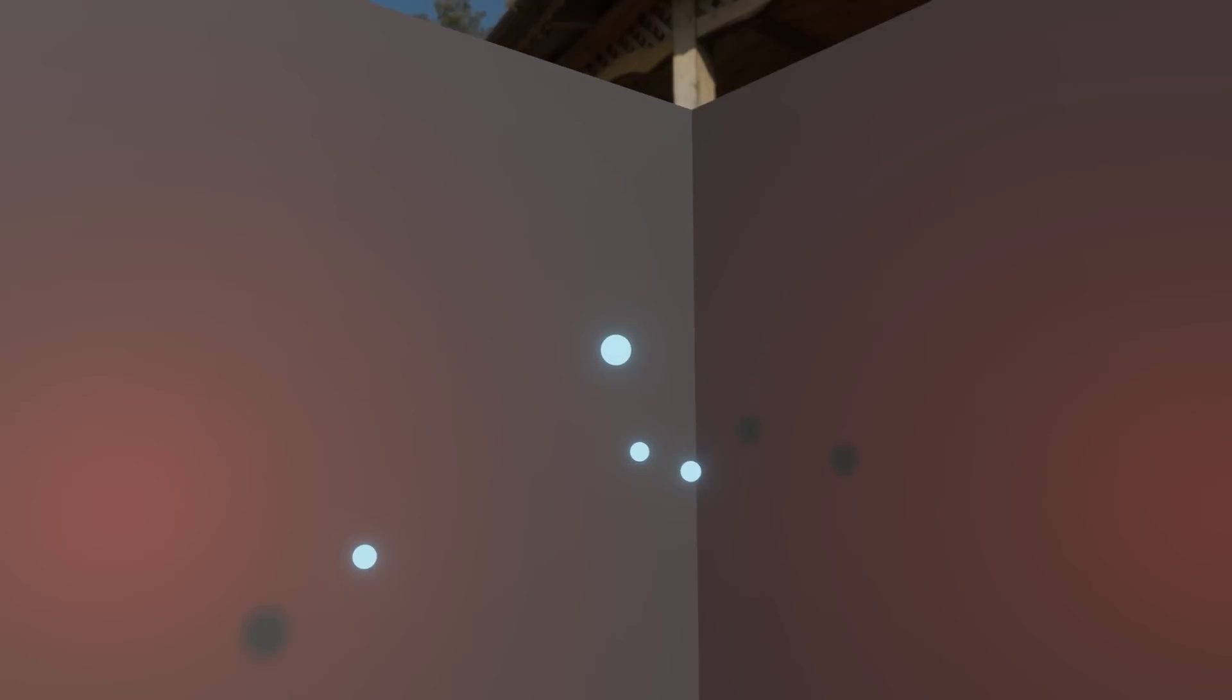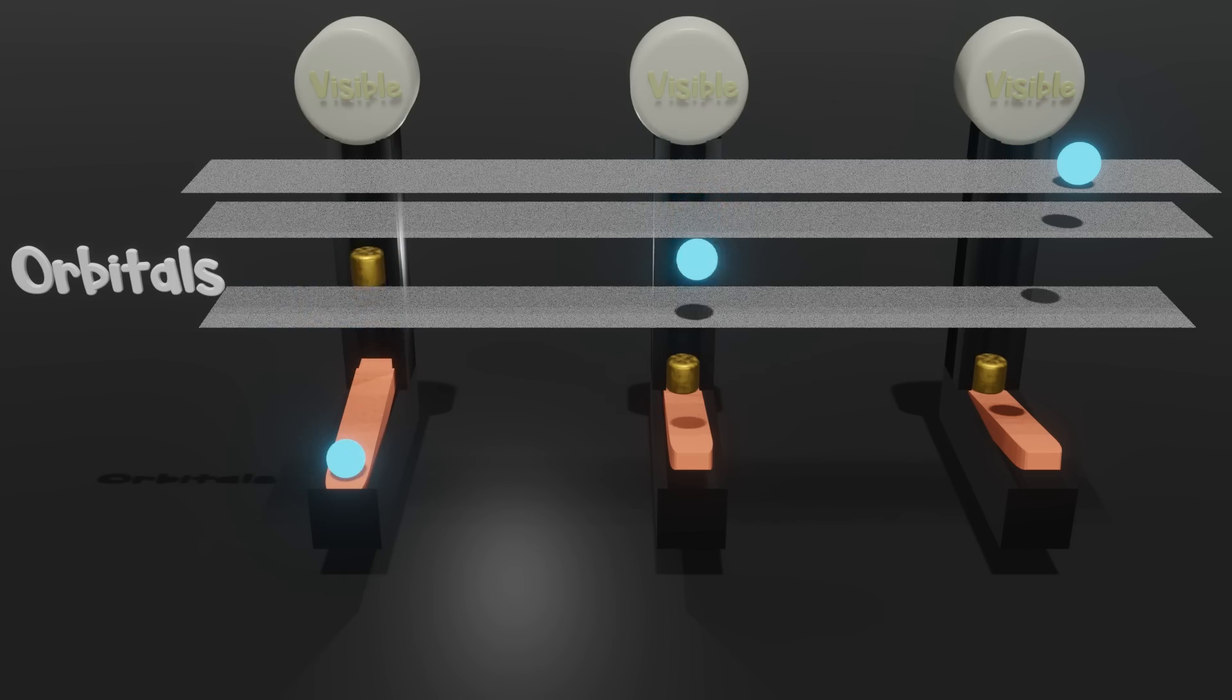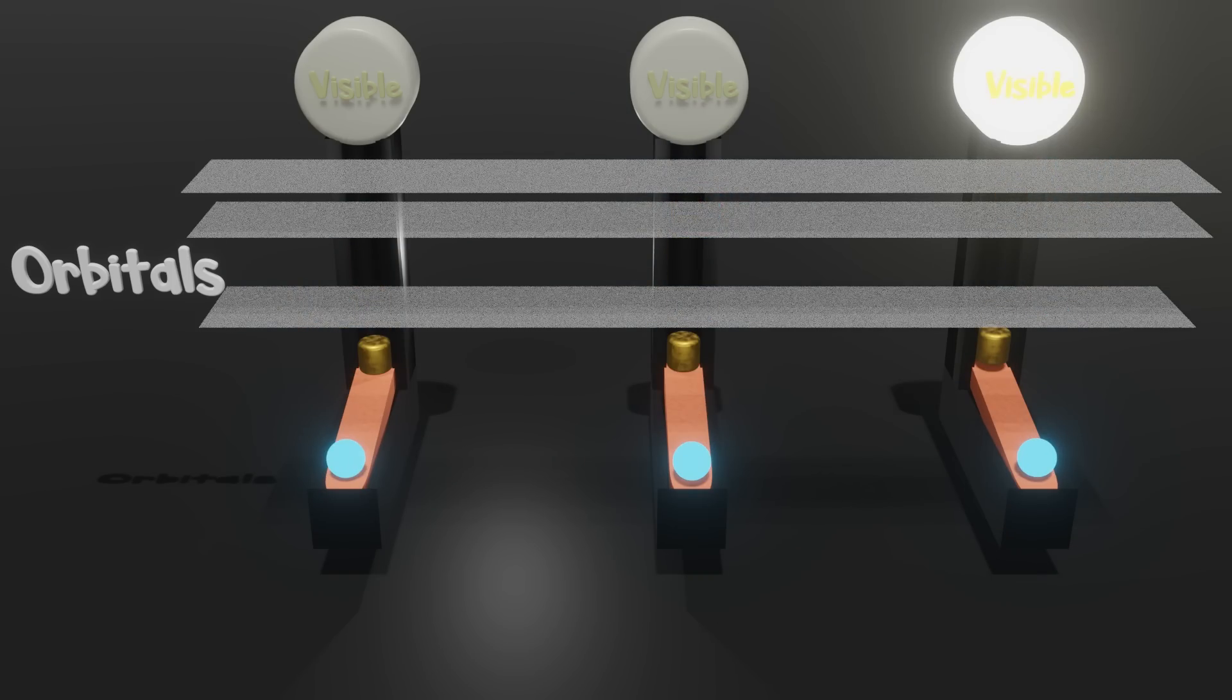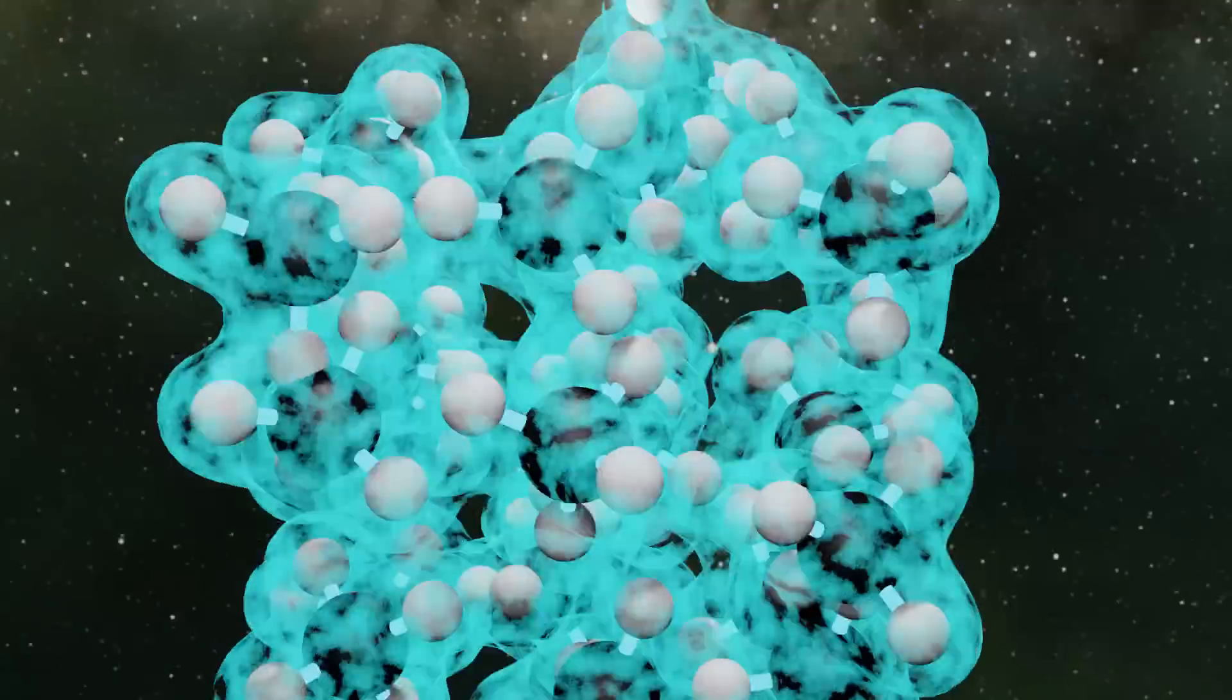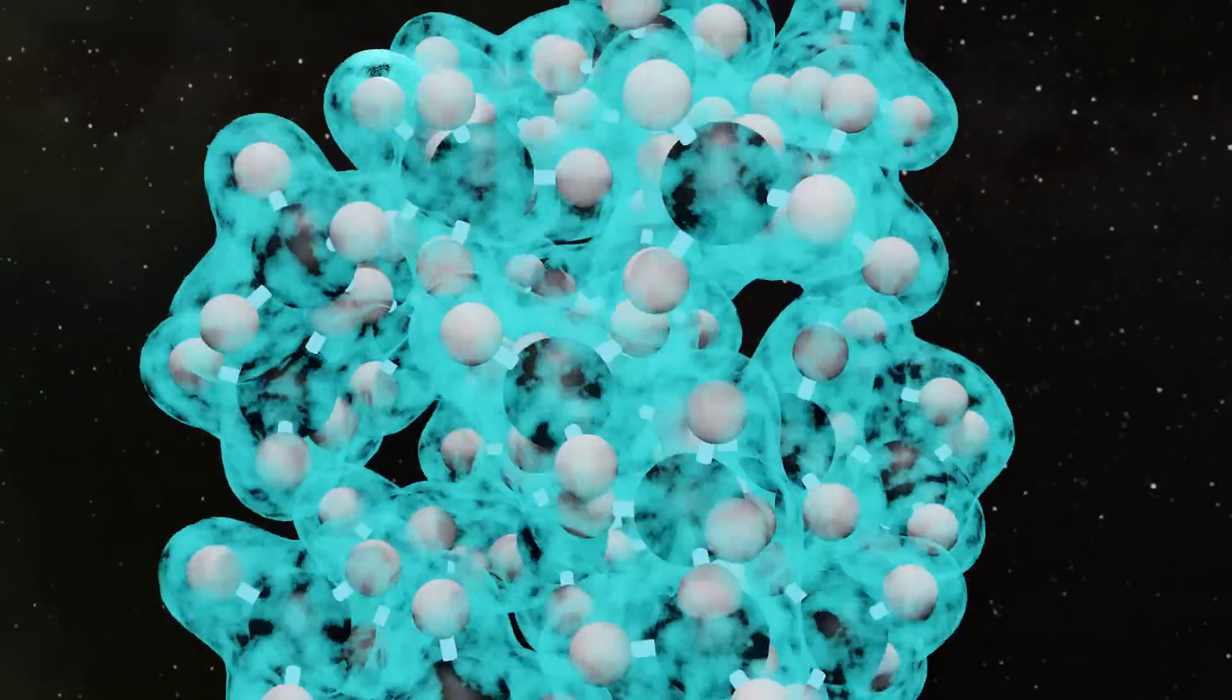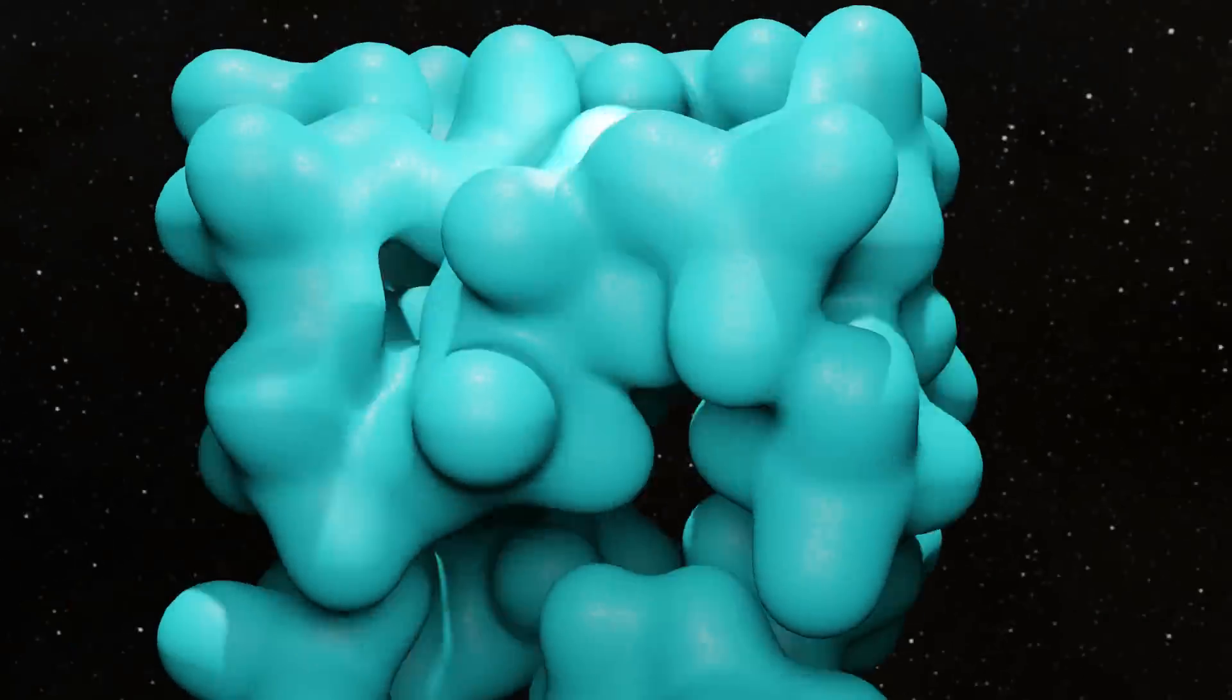If we can excite an electron into a high enough orbital, at some point the light energy it gives off when it returns to its ground state will be in the visible spectrum. In matter, orbitals of nearby molecules and atoms overlap and create even more orbitals, or nooks and crannies, electrons can occupy.